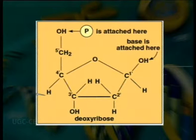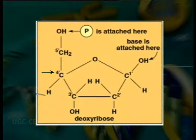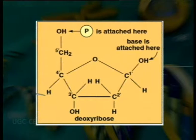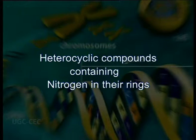The position of carbon atoms of pentose sugars are denoted as 1', 2', 3', 4', and 5', in order to differentiate them from the corresponding positions in DNA bases, which are not marked by a prime. The bases found in nucleic acids are heterocyclic compounds containing nitrogen in their rings. Hence, they are called nitrogenous bases.